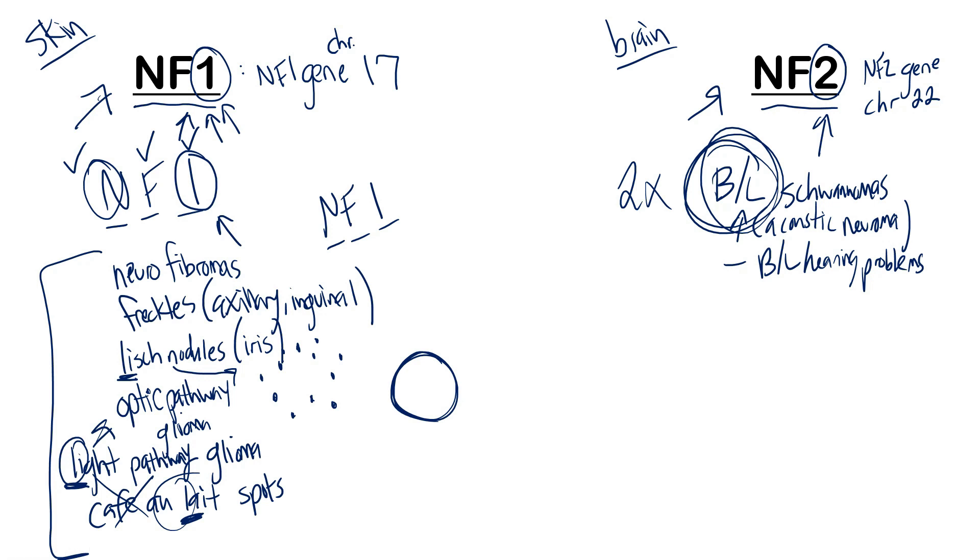It's very important that you remember bilateral, because that distinguishes it from other things that cause unilateral hearing loss, whereas this is bilateral schwannomas. Just a schwannoma by itself is 90% of the time unilateral. When you see bilateral schwannomas in a patient, you need to think of NF2. The next one is bilateral cataracts. I want to emphasize here that the cataracts can be bilateral.